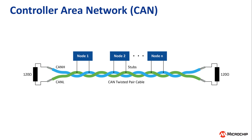Electrically, CAN is differential pair signaling that utilizes a twisted pair of wires to improve immunity to common mode electrical noise in the environment. This bus is frequently used in applications with a lot of electrical noise.